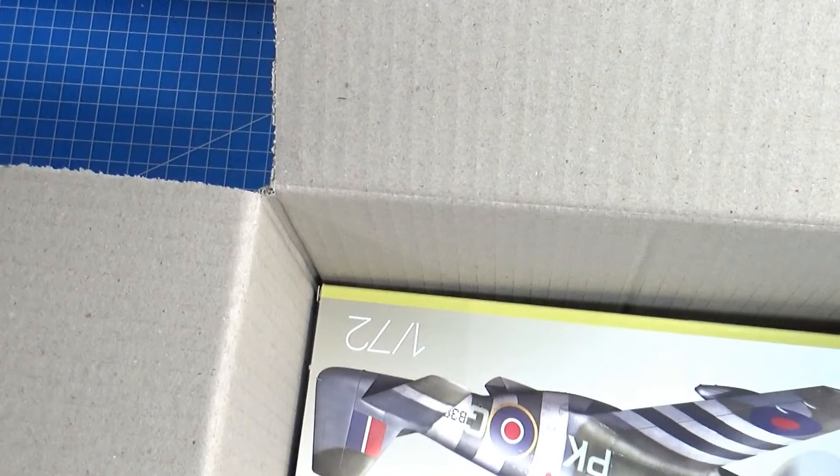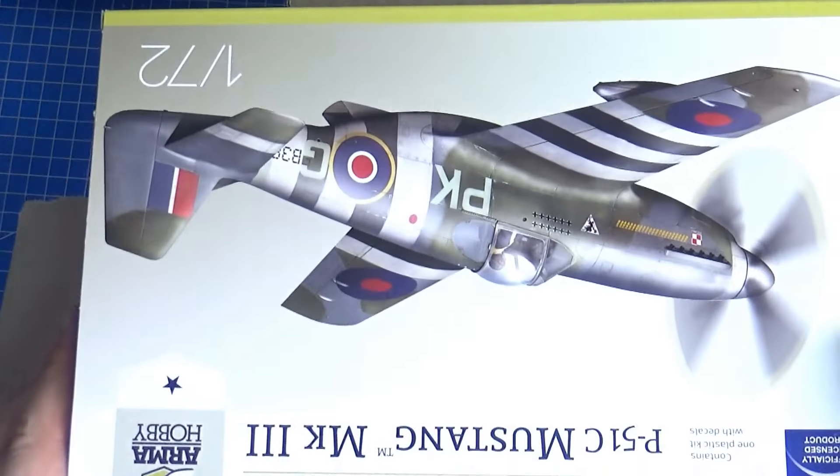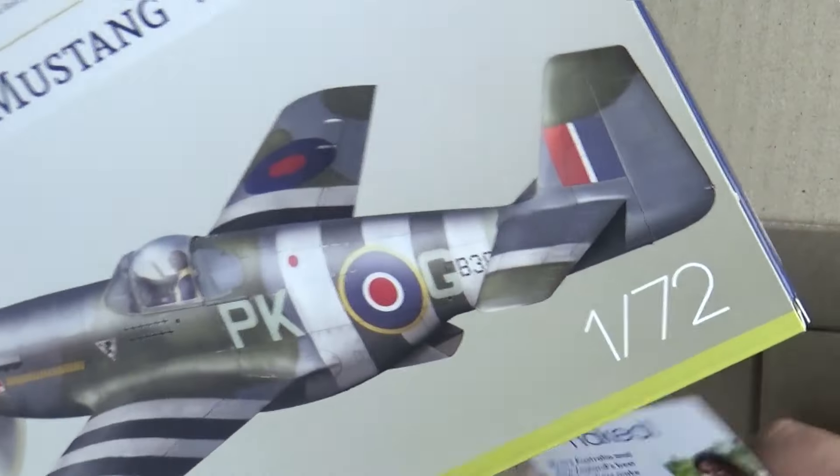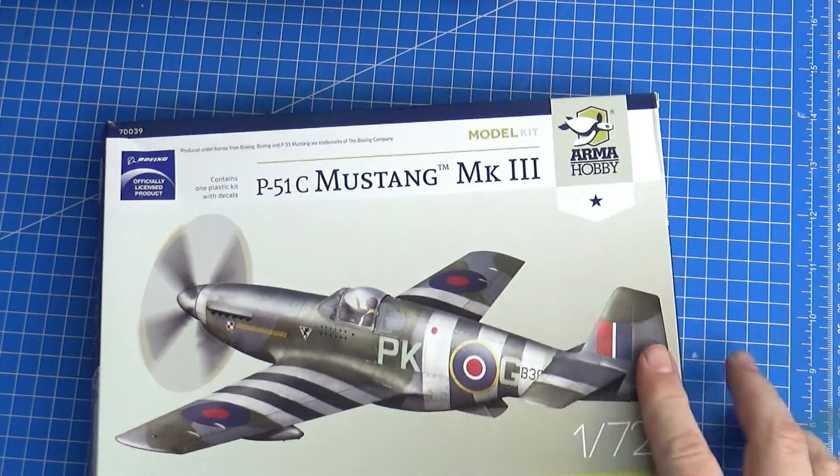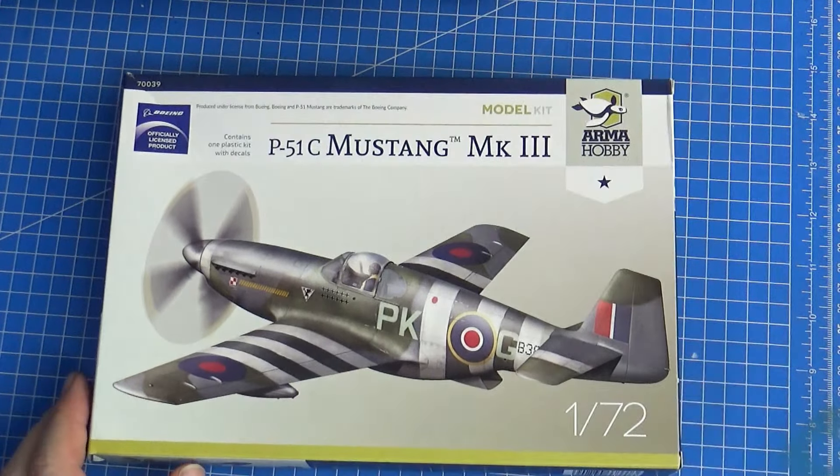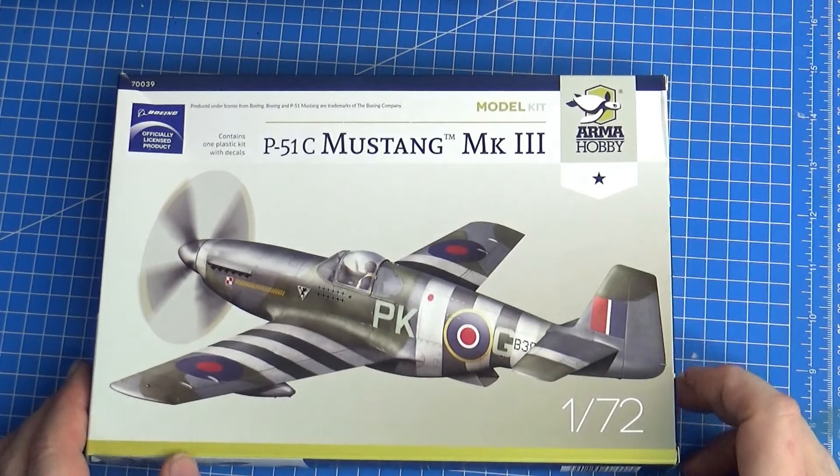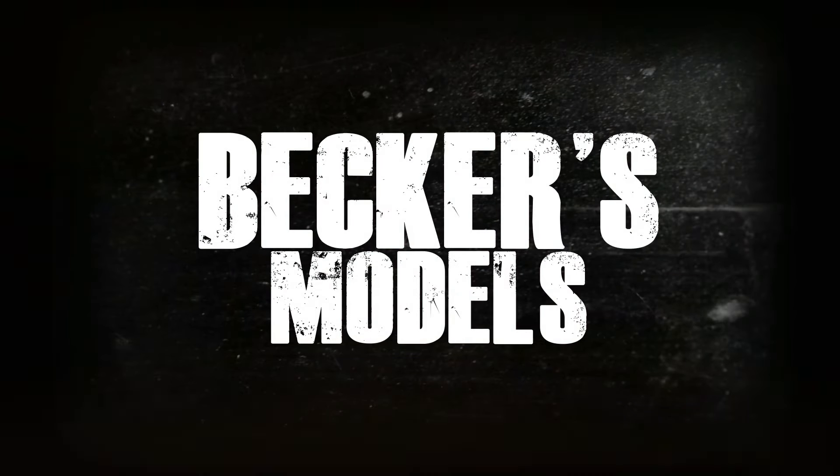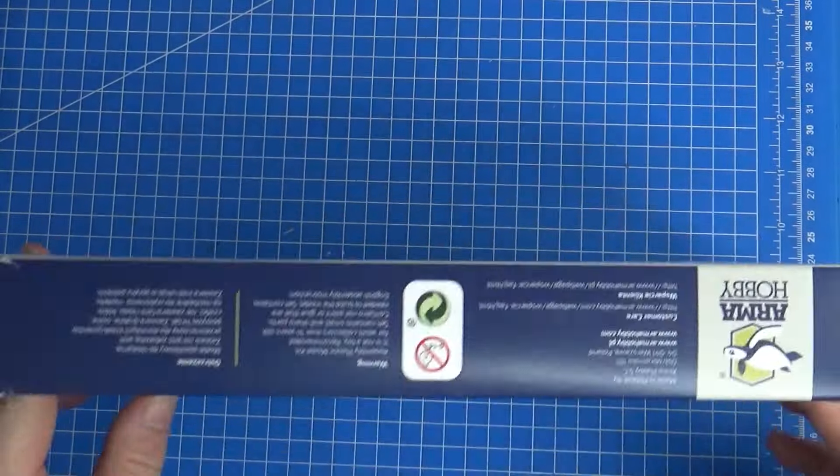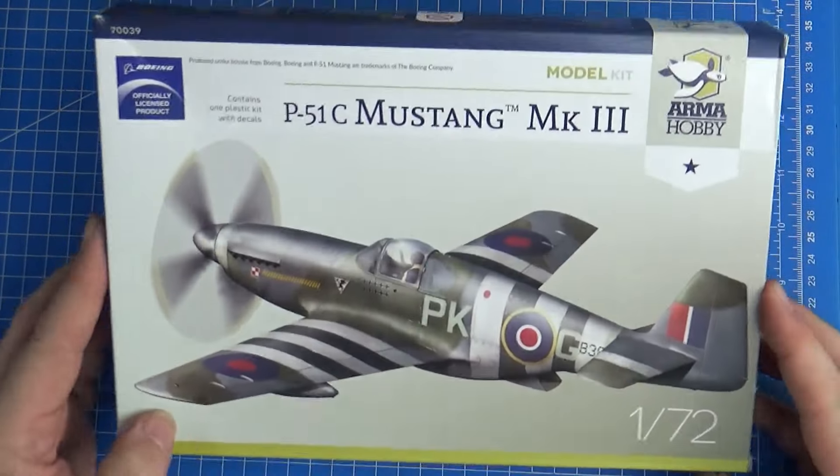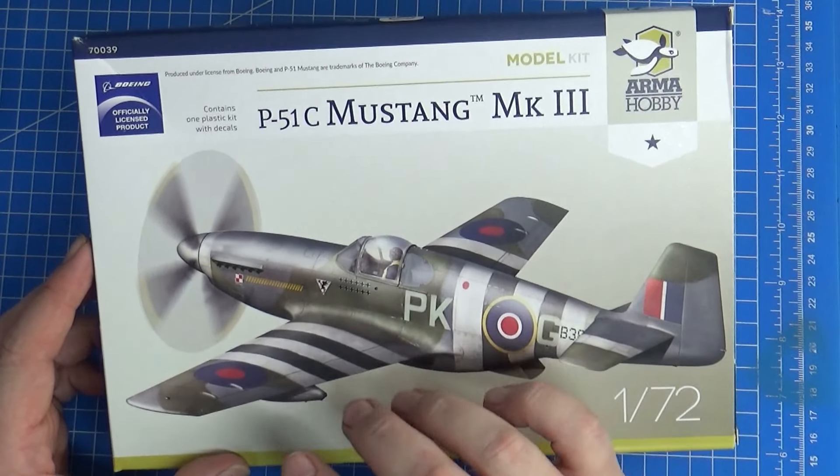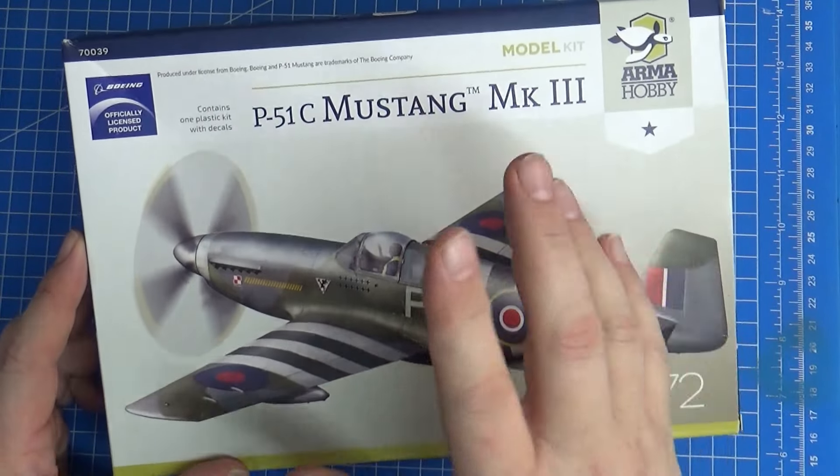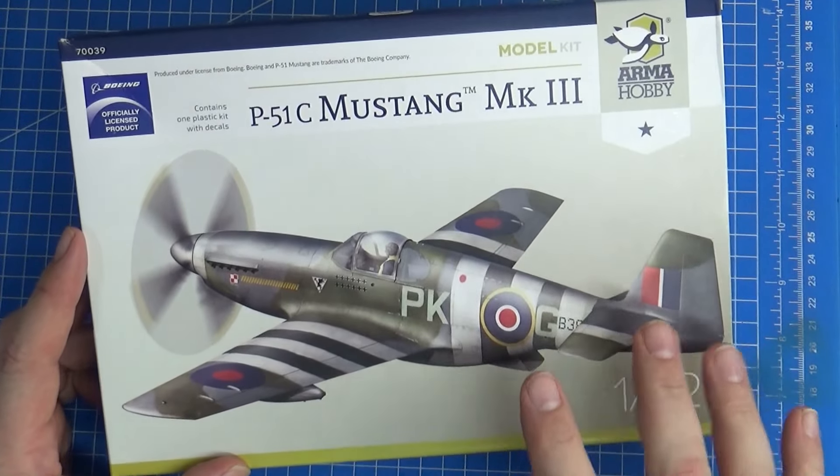Massive bloody box for what should be a little kit. Look at that, it's a tiny little box. Let's spin this around. There it is—Armor Hobby P-51C Mark III 1/72 scale Mustang. Here's the tiny little box, and you're probably thinking, why have I got this kit?